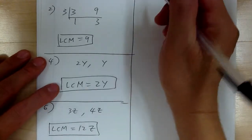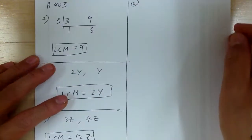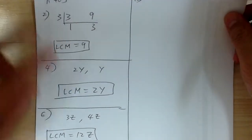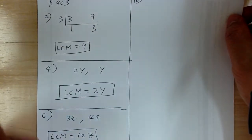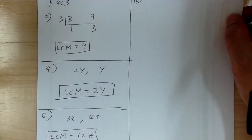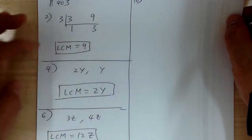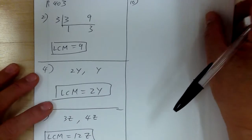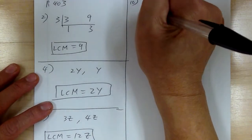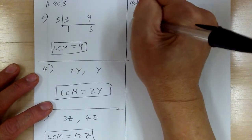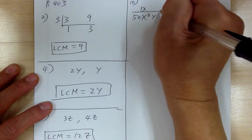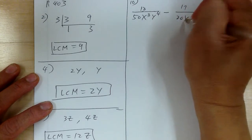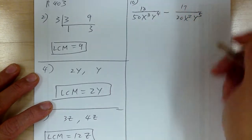Let's go to number 10 — this one is for LCD. Now LCD and LCM, in a way they are the same. The difference is LCD is on the denominator; LCM is just factors without the fraction. So number 10, you've got 13 over 50x cubed y to the 4, minus 17 over 20x squared y to the 5.